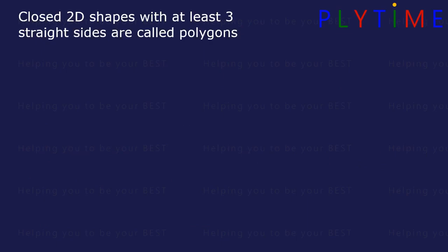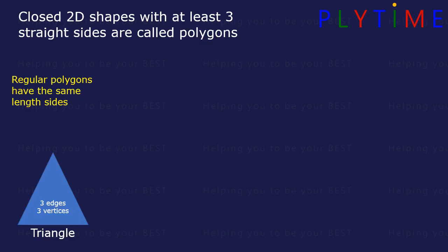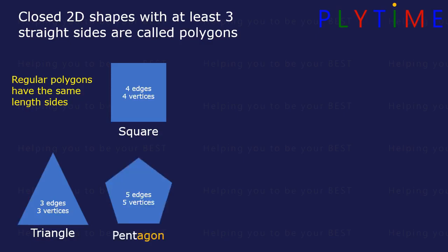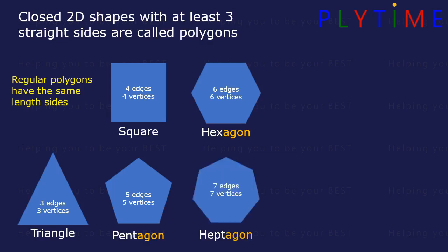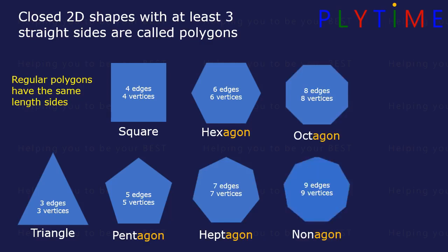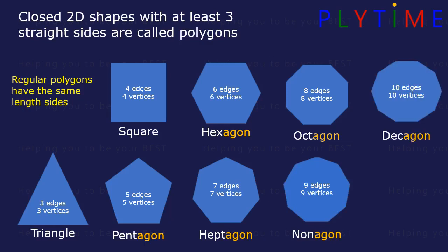Closed 2D shapes with at least three straight sides are called polygons. Regular polygons have the same length sides. An equilateral triangle has three edges and vertices. A square has four edges and vertices. A pentagon has five edges and vertices. A hexagon has six. A heptagon has seven. An octagon has eight edges and vertices. A nonagon has nine edges and vertices.